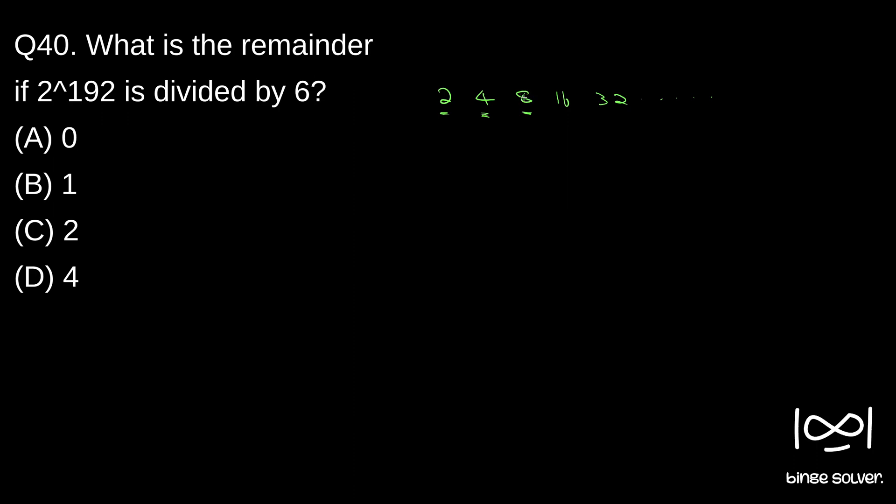The remainder is, if you divide 8 by 6, remainder will be 2. For 16, remainder will be 4 when divided by 6. And for 32, when you divide by 6, 6 times 5 is 30, so the remainder is 2.